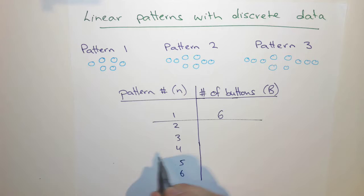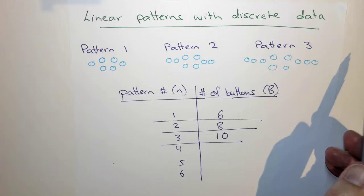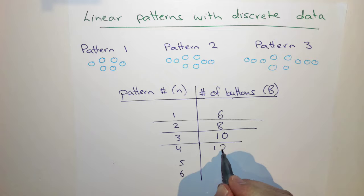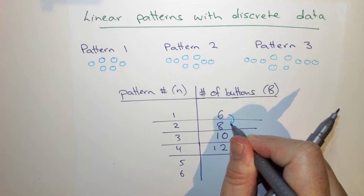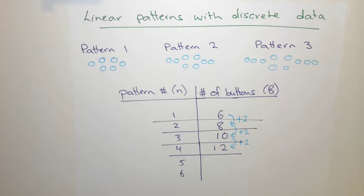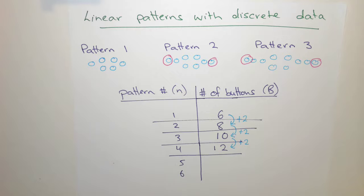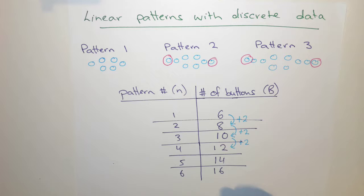Pattern number one has six buttons in total. Pattern number two has eight. Pattern number three has ten. If we extend to pattern number four, we'd add one to each end, giving two more, up to twelve. So we're going from six to eight — adding two; eight to ten — adding two; ten to twelve — adding two. Those two are the buttons added at each end. So pattern five would have fourteen, and the sixth would have sixteen, and so on.